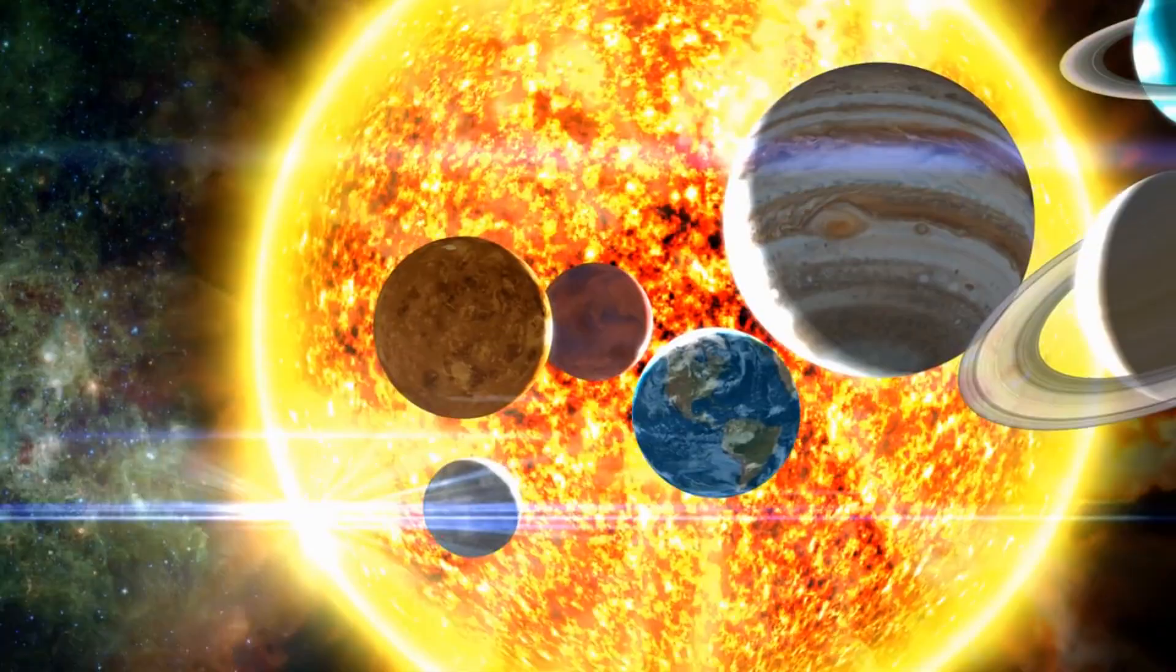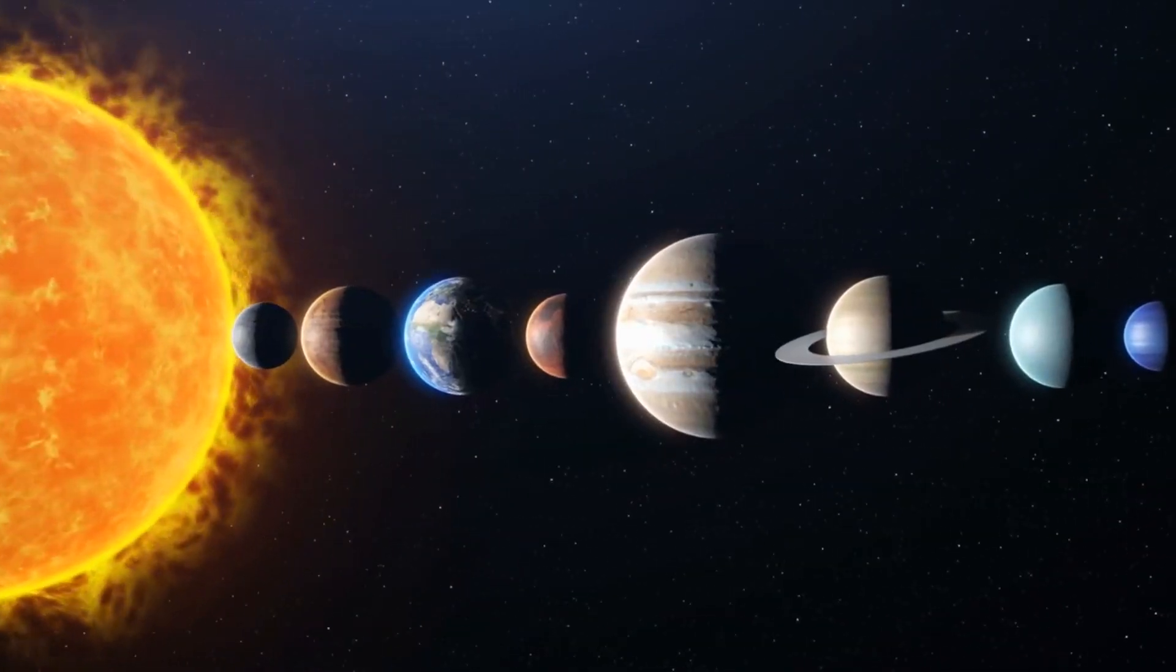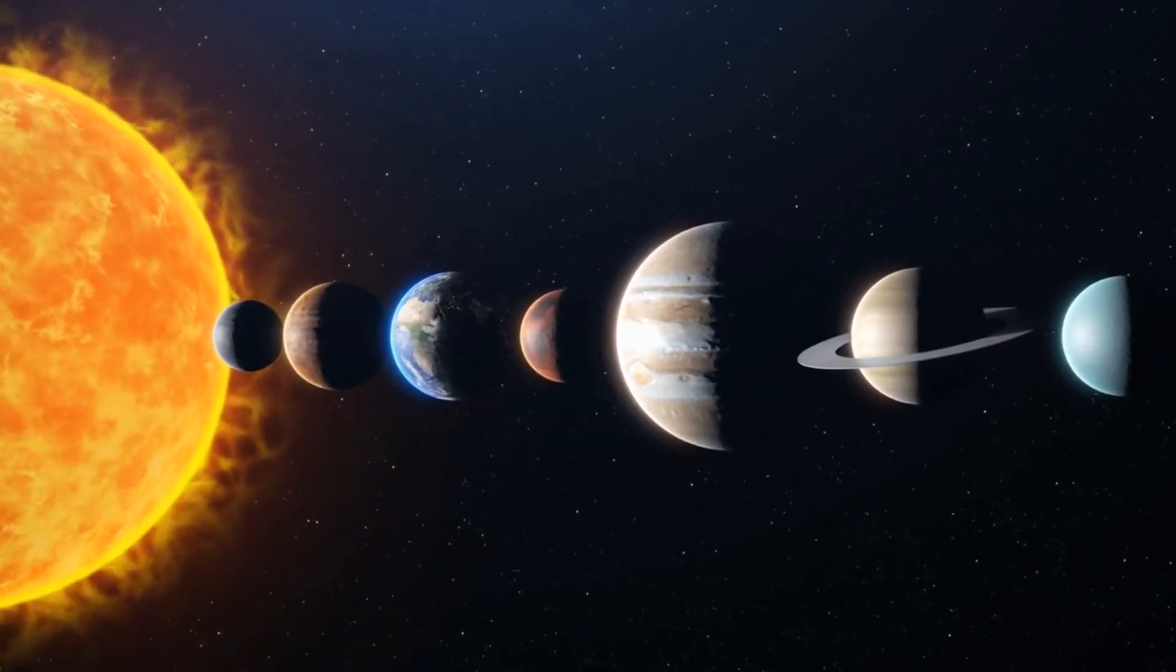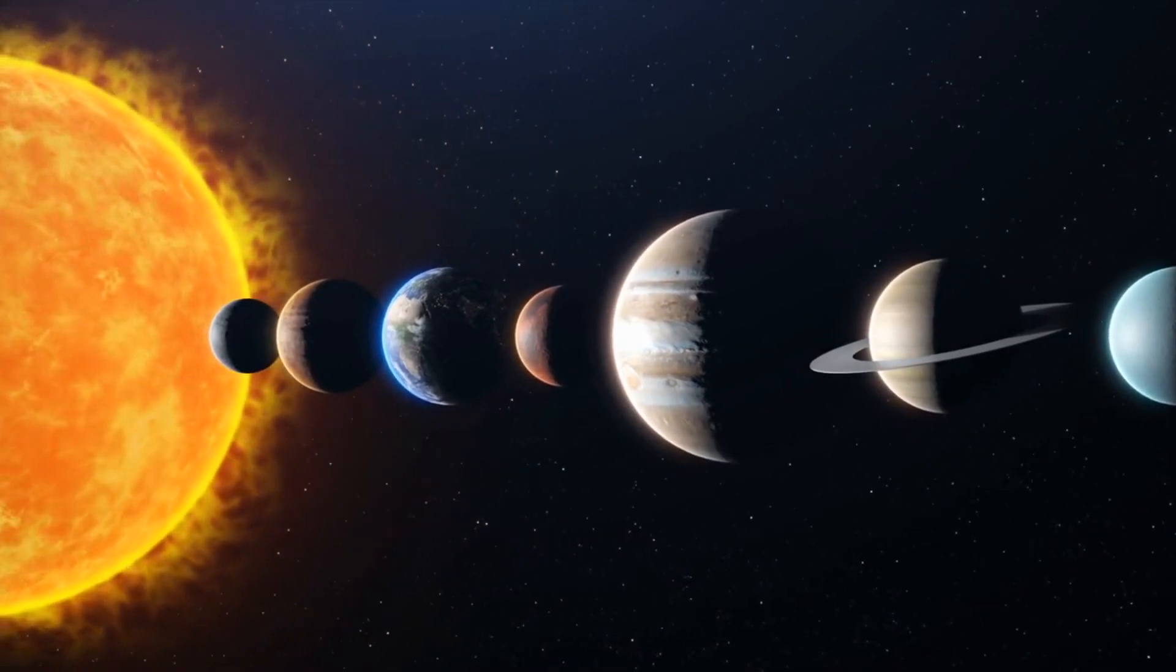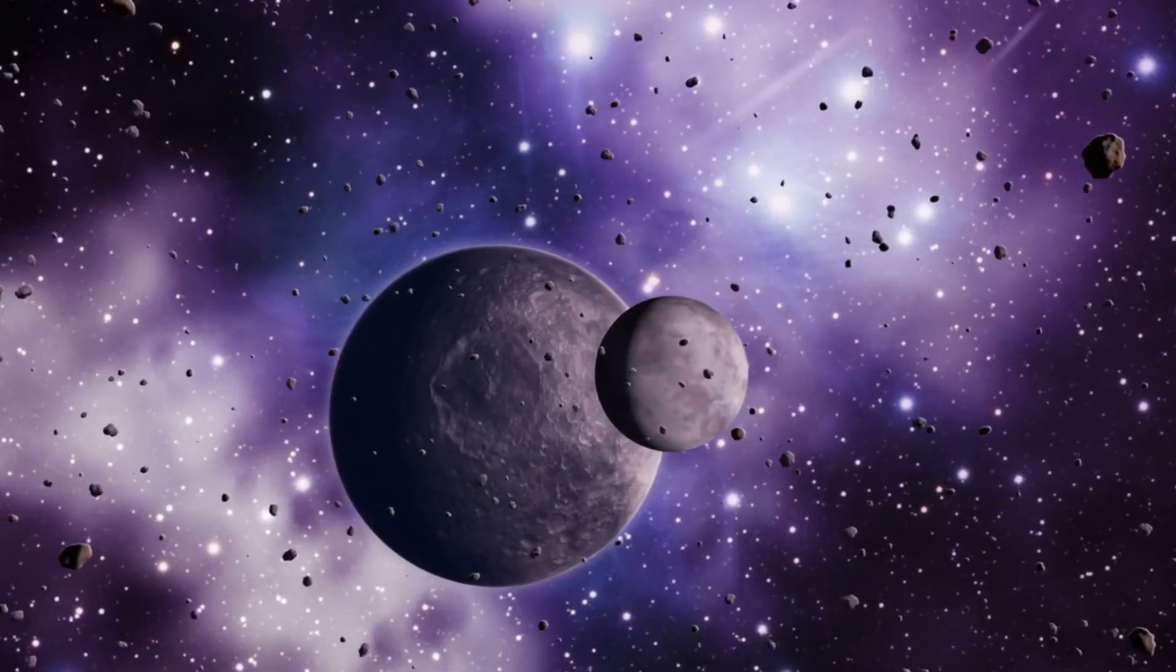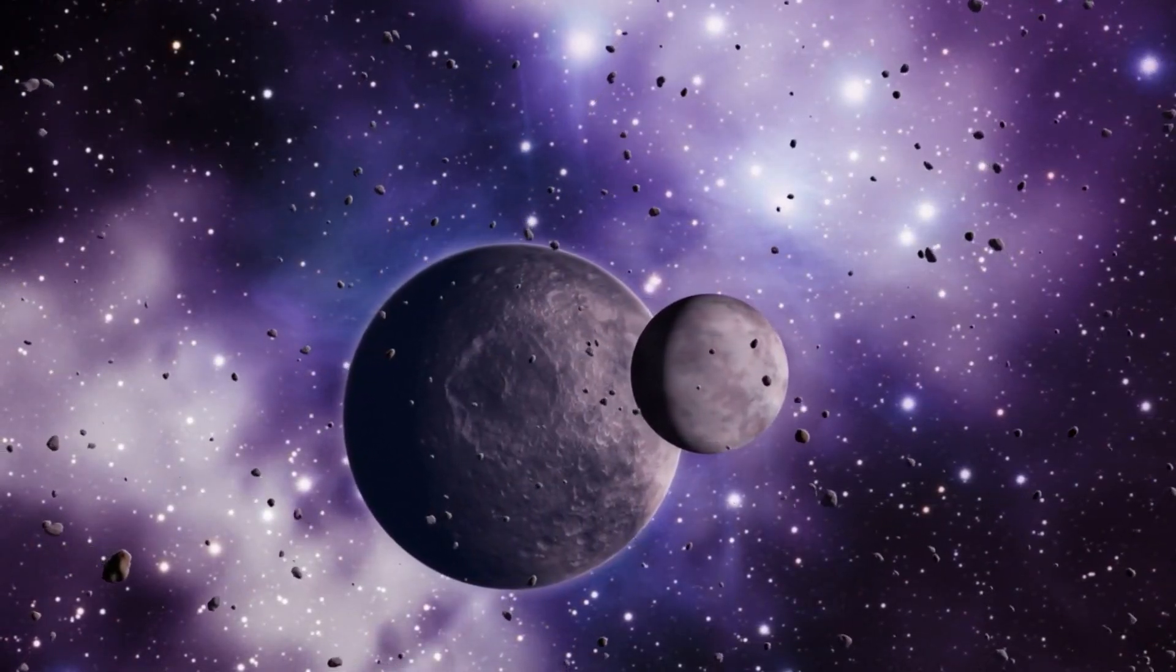There are eight solar system planets. The eight planets of our solar system are divided into the inner planets: Mercury, Venus, Earth, and Mars, and the outer planets: Jupiter, Saturn, Uranus, and Neptune.